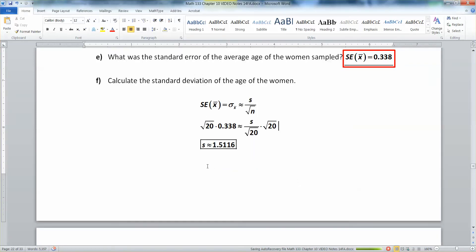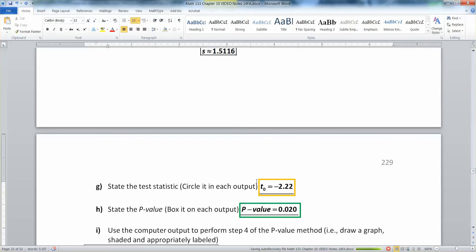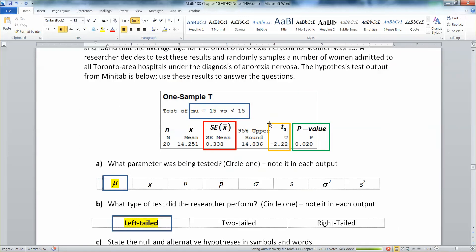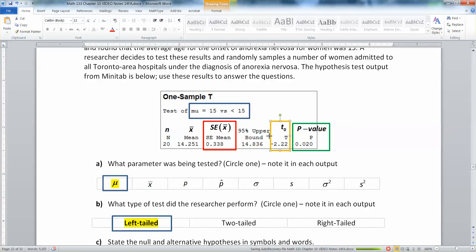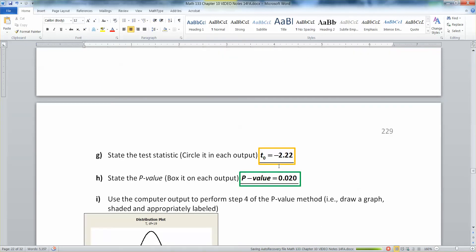All right now that we know the standard deviation let's find the test statistic and the p value. So the test statistic I circled in orange and the p value circled in green right here. You can see them right in the output right here. Test statistic is t0 so that's the letter t. So when you see the t in that problem right there at negative 2.22 that's your t0. Your p value is the capital P at the end. So that's your p value. So those two numbers are figured out.